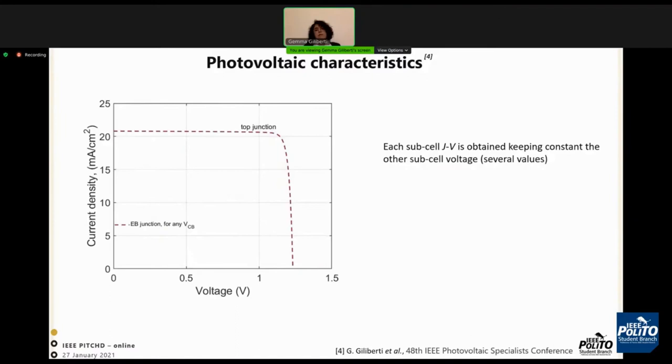Now, let's observe the JV curves of subcells that are obtained keeping constant the other subcell voltage. First of all, in the plot we can observe the emitter-base voltage that is the same for any value of base-collector voltage. Then this is the bottom JV curve, so the base-collector JV curve for emitter-base voltage equal to zero.